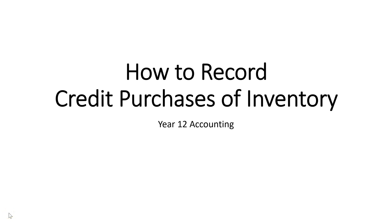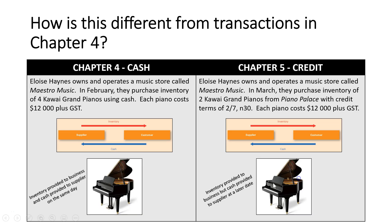In this video we're going to look at how to record credit purchases of inventory using both the general journal and the general ledger. How is this different from transactions we've already seen in chapter 4? In chapter 4 we only dealt with cash transactions. Eloise Haynes owns and operates a music store called Maestro Music. In February they purchased inventory of four Kawai grand pianos using cash. The supplier, Piano Palace, gave us inventory and we as the customer, Maestro Music, gave them cash straightaway.